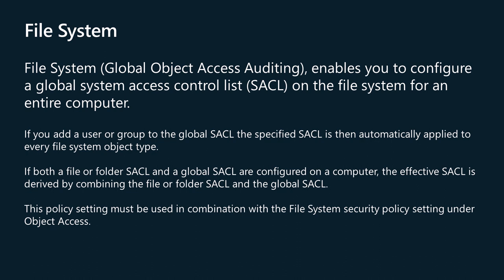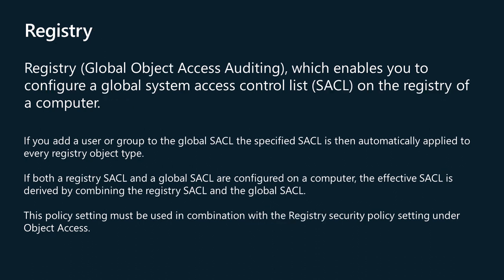Remember that policies under object access are a whole different kettle of fish to policies under global object access auditing, even if they have to be used in conjunction with one another. The global object access auditing registry policy enables you to configure a global system access control list, SACL, on the registry of a computer. If you select the configure security checkbox on this policy's property page, you can add a user or group to the global SACL, enabling you to define SACLs for the object type for the registry. The specified SACL is then automatically applied to every registry object type. This policy setting must be used in combination with the registry security policy setting under the object access category of advanced auditing policies.